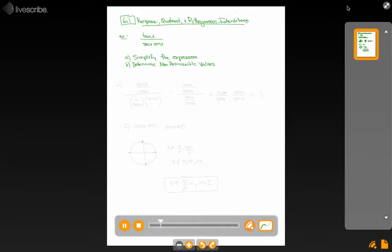So I might start off by writing everything in terms of sine and cos, that's often a good strategy in these types of questions, so sine x over cos x divided by 1 over cos x times sine x.